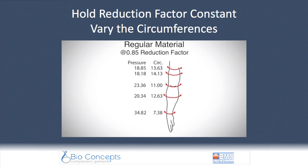Keep in mind the reduction factor is essentially equal to tension in the Laplace Law — it is what creates the force that results in the pressure. A sleeve designed with a simple reduction factor will exhibit a tendency for the smaller circumferences at the distal part to be at a higher pressure than proximal parts. But the distribution of circumferences on a sleeve is not going to be continuous from small to large. As a result, some distal areas will receive a lower pressure than some more proximal areas, and we don't usually want that to happen.